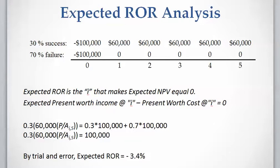The expected rate of return is the rate that makes the expected NPV equal to zero. The equation for expected rate of return is: expected present value of income equals expected present value of cost. In the success case, we have $60,000 for five years, and multiplying the present value factor by the 30% probability of success gives the expected present value of income.